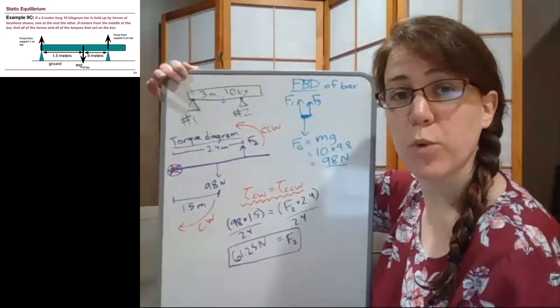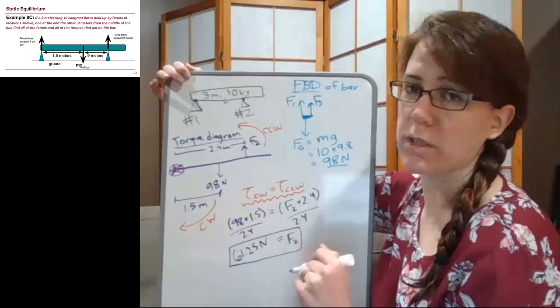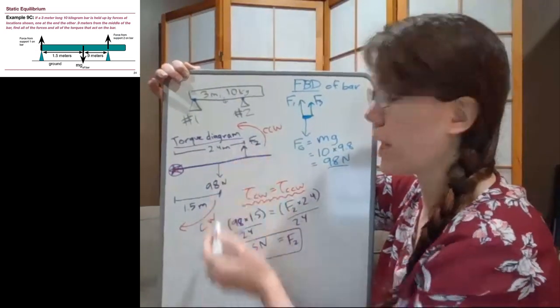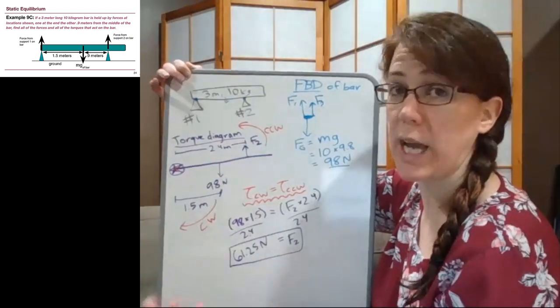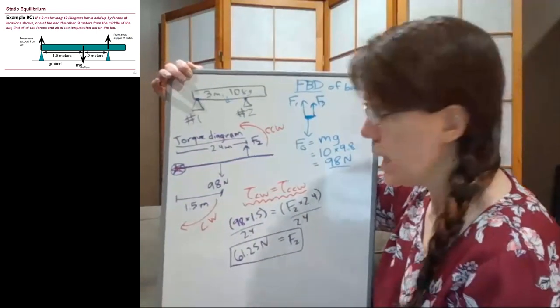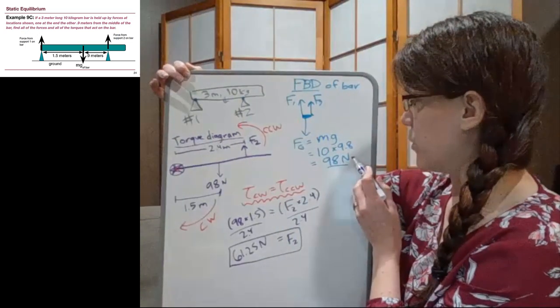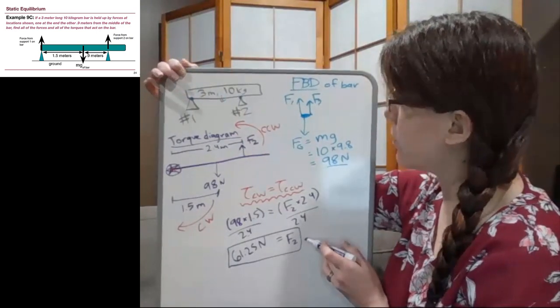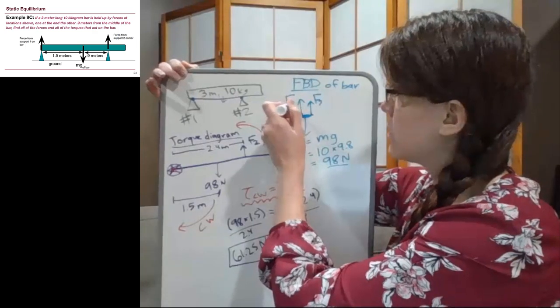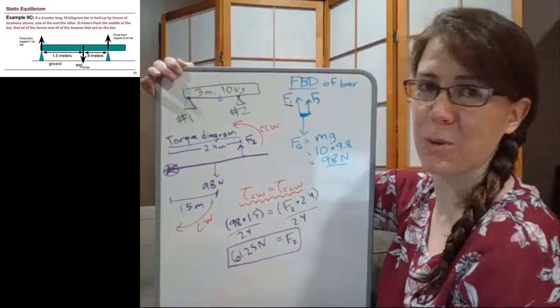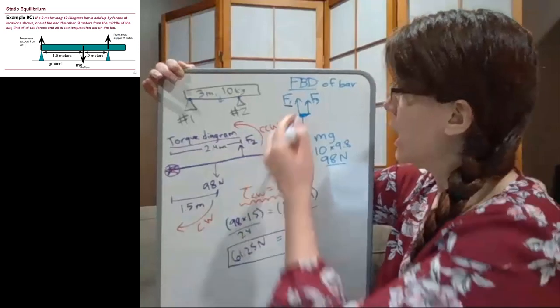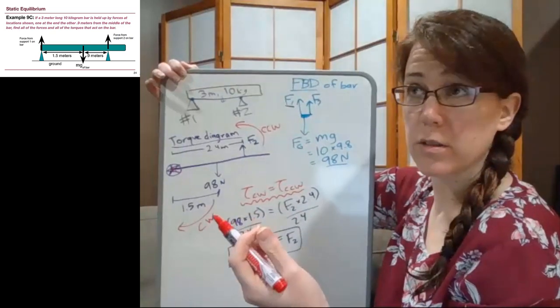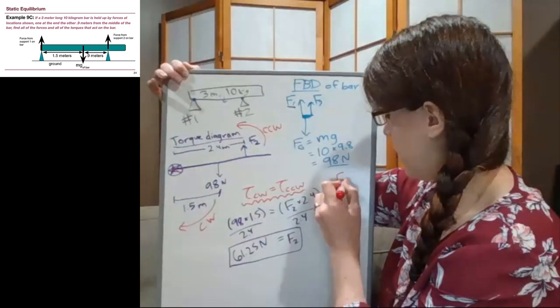And if we look at the problem, we're asked to find all of the forces and all of the torques that act on the bar. This is the idea of solving for the torques, just making sure that we've counted up the torques relative to an axis. That's what that part means. And then for finding all of the forces, we have found the force of gravity, 98 newtons. We have found the force from support 2, 61.25 newtons. And now we need to find the support for the force for support number one.